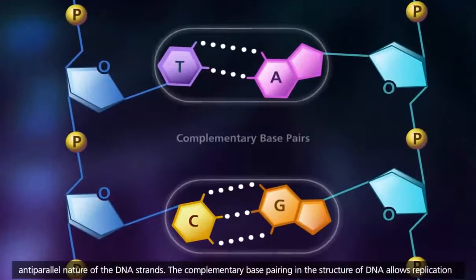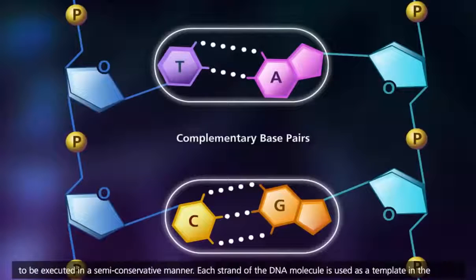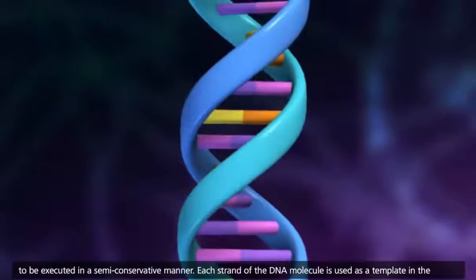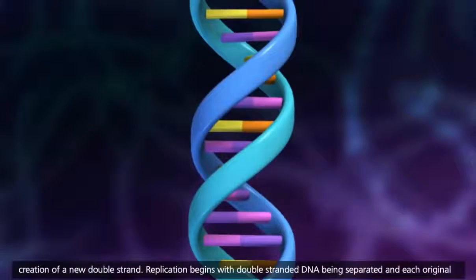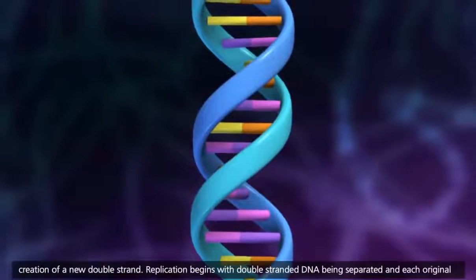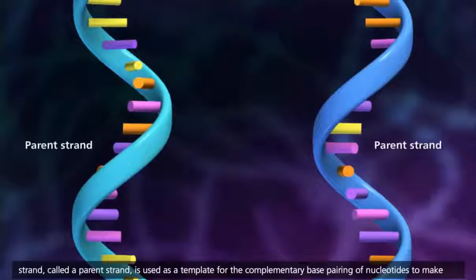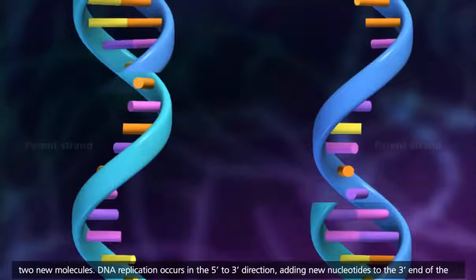The complementary base pairing in the structure of DNA allows replication to be executed in a semi-conservative manner. Each strand of the DNA molecule is used as a template in the creation of a new double strand. Replication begins with double-stranded DNA being separated, and each original strand, called a parent strand, is used as a template for the complementary base pairing of nucleotides to make two new molecules.